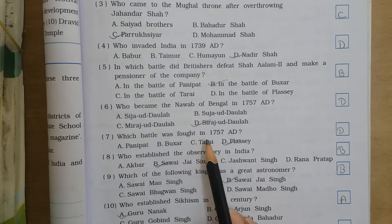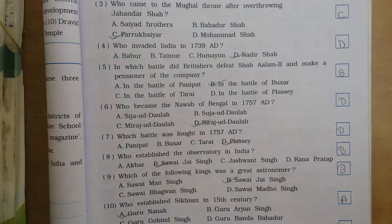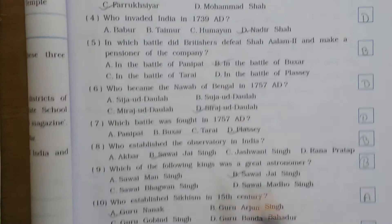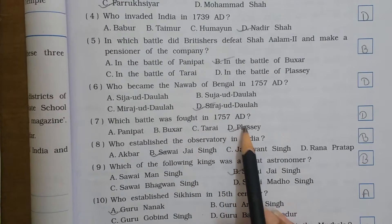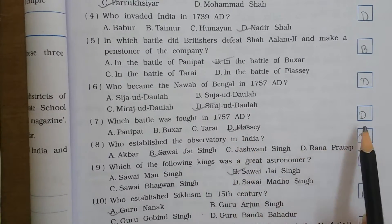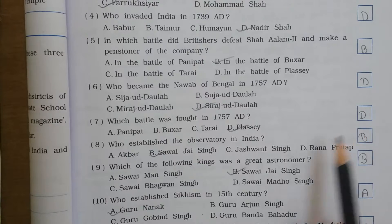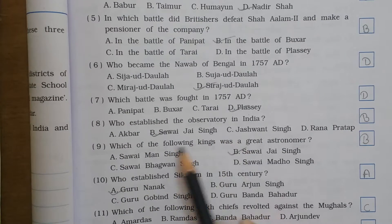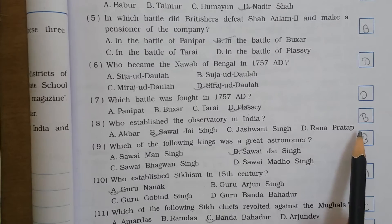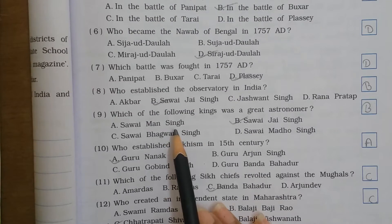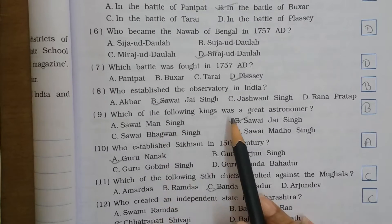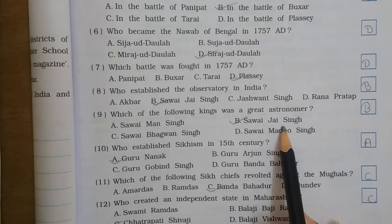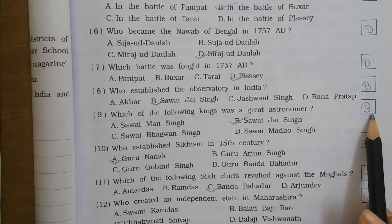Which battle was fought in 1757 AD? It is Plassey. So the answer is D. Who established observatories in India? Sawai Jai Singh. The answer is B. Which of the following kings was a great astronomer? He was also Sawai Jai Singh. So the answer is B.